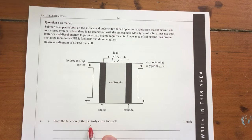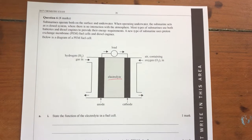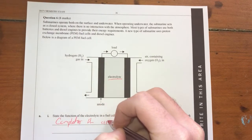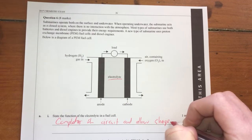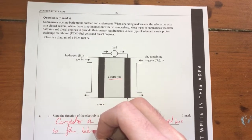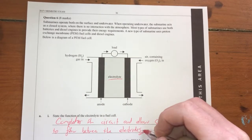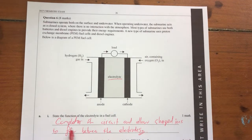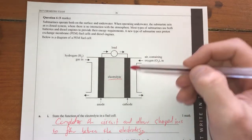What we need to do is state the function of the electrolyte in a fuel cell. So what does an electrolyte do? Well, it's the same as a salt bridge in a galvanic cell. So what it does is it completes the circuit and allows charged ions to flow between the electrodes. It's a go-to answer. If you have what does an electrolyte do or what does a salt bridge do,